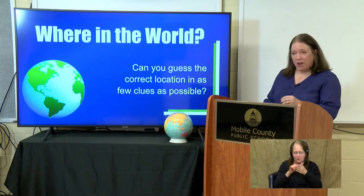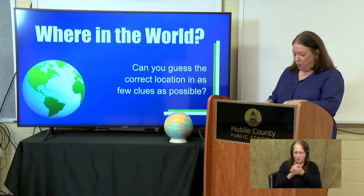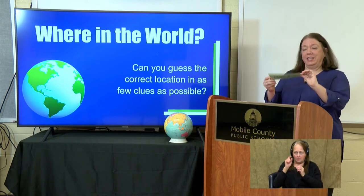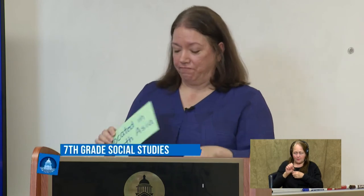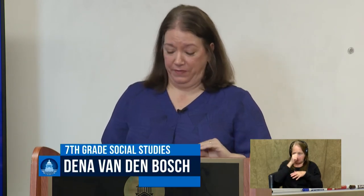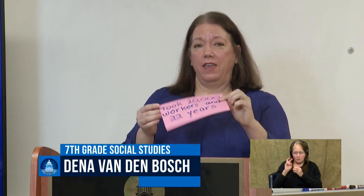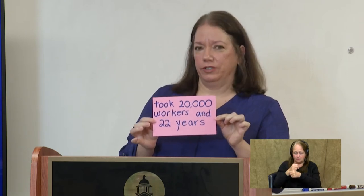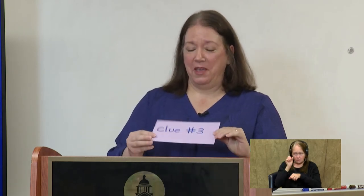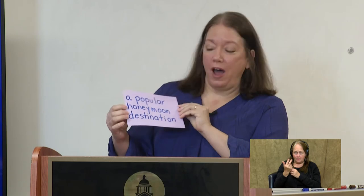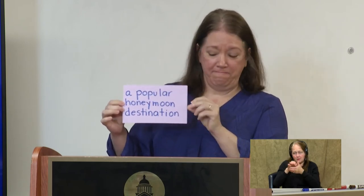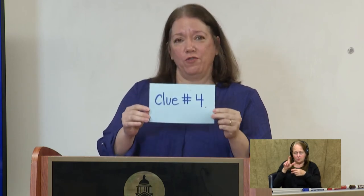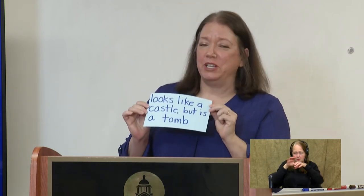Let's get started with our 'Where in the World' segment. This week's clue number one: it's located in South Asia. Clue number two: it took 20,000 workers and 22 years to build. Clue number three: it's a popular honeymoon destination. And clue number four: it looks like a castle, but it's really a tomb. Can you guess it?